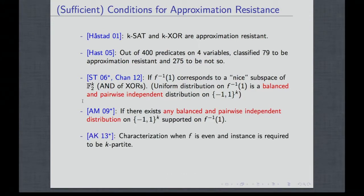The previous characterization, by Austrin and Khot, applies in special cases where f is even — meaning if you flip all the variables, the value of the predicate does not change — and the instance is required to be k-partite. That's a restriction not just on the predicate but on what kind of problem instance you are given: variables are arranged in k layers, and each constraint picks its first variable from the first layer, second from the second layer, and so on. This characterization is not necessarily the same as a characterization of general instances, and we believe it's somewhat restrictive.